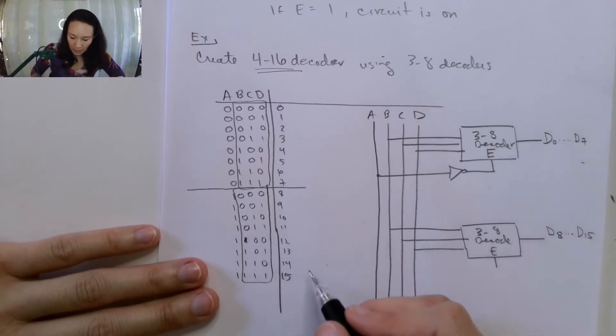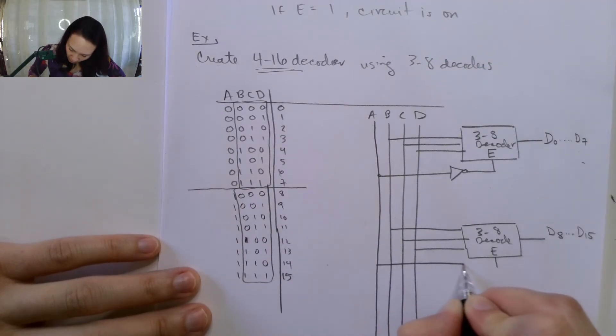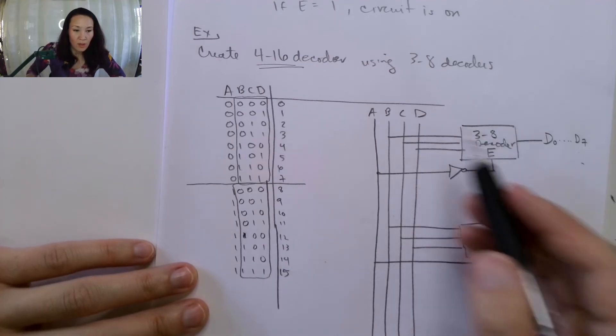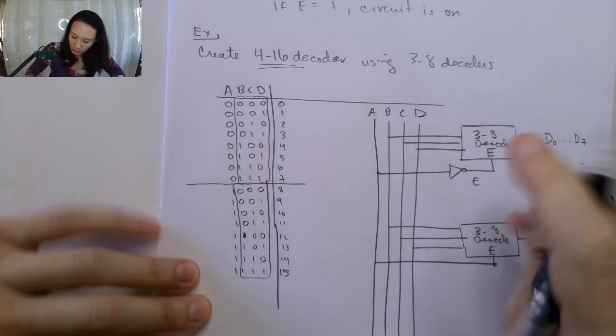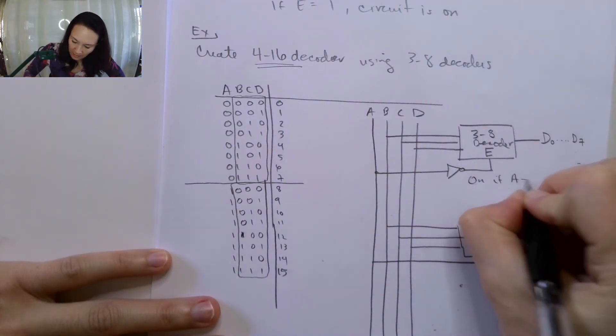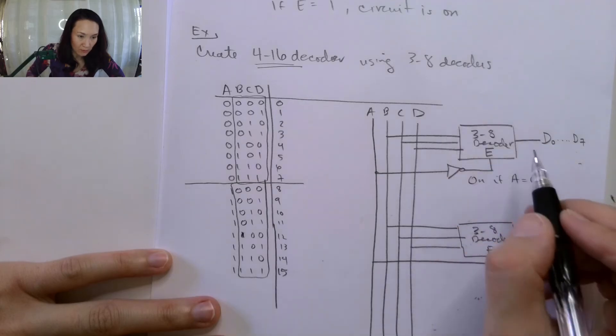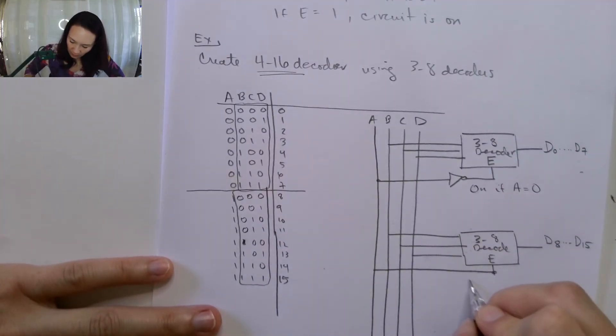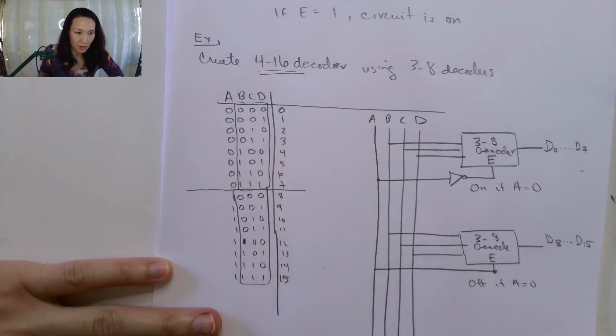Now for this decoder, I want this decoder to be the one that's selected when A is equal to 1. So this is going to be just a direct connection with A. Here I have enable. This is on if A is equal to 0. So 0 comes in here, gets inverted to a 1, so we have a 1 piped into our enable, which is going to turn on this decoder. If A is equal to 0 over here, this is going to be off. So we're selecting this decoder and not this one if A is equal to 0, which is what we want based on our truth table.